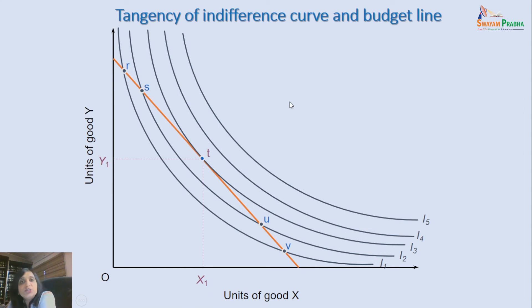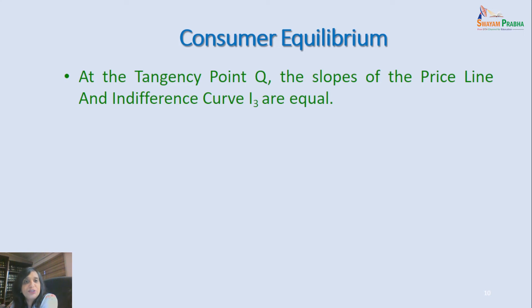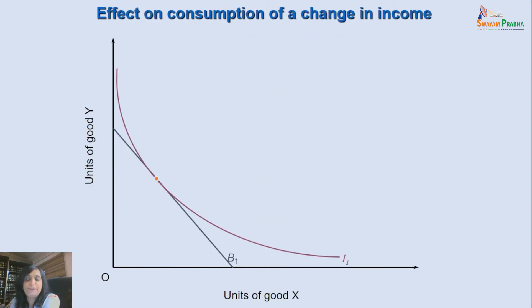At point T, this consumer derives maximum satisfaction by consuming X1 of good X and Y1 of good Y. Consumer equilibrium is at the point where the slope of the indifference curve equals the slope of the budget line — that is, where the indifference curve and the budget line are tangent to each other. At this tangency point, the curves are touching but not cutting each other, and the MRS — the slope of the indifference curve — equals the slope of the budget line.